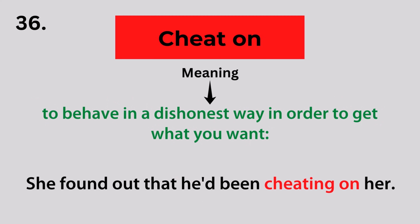Cheat on. Meaning: to behave in a dishonest way in order to get what you want. She found out that he had been cheating on her.